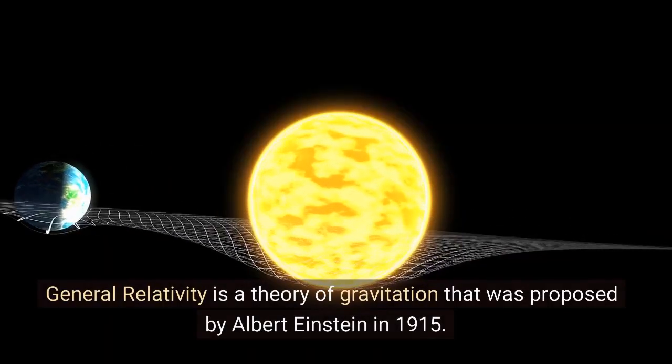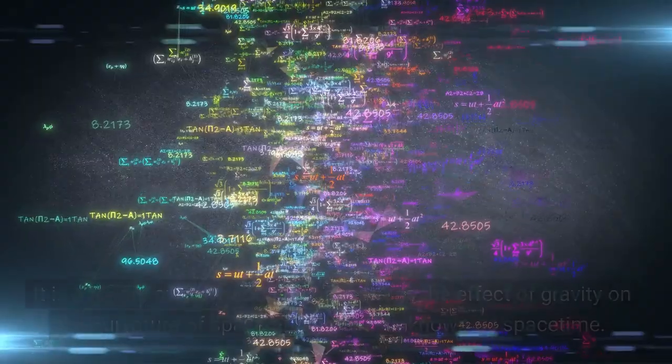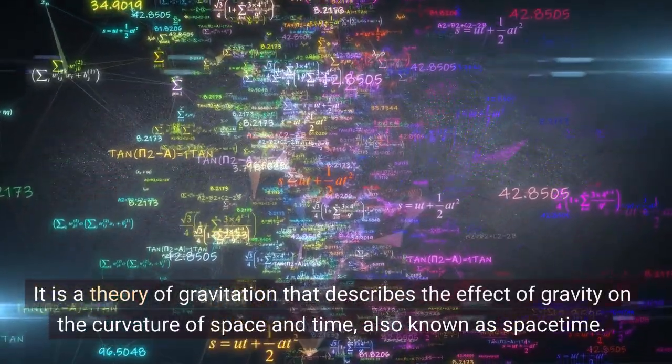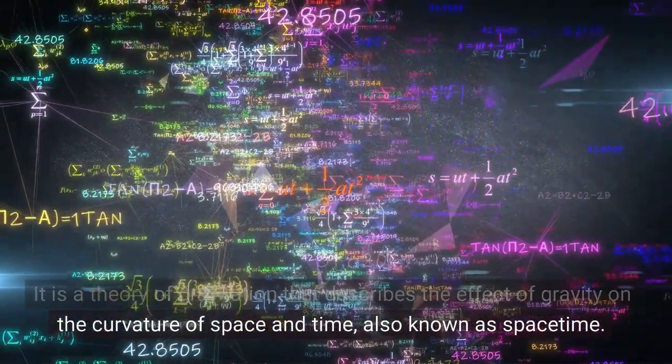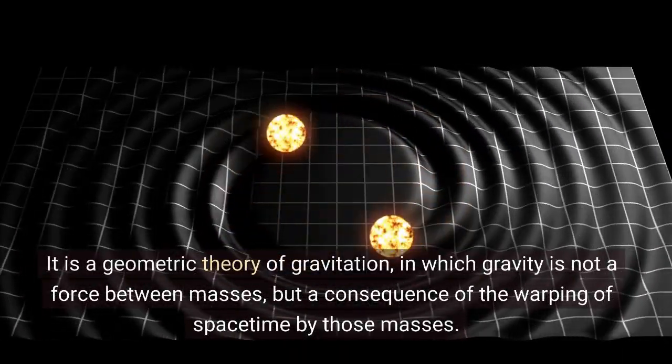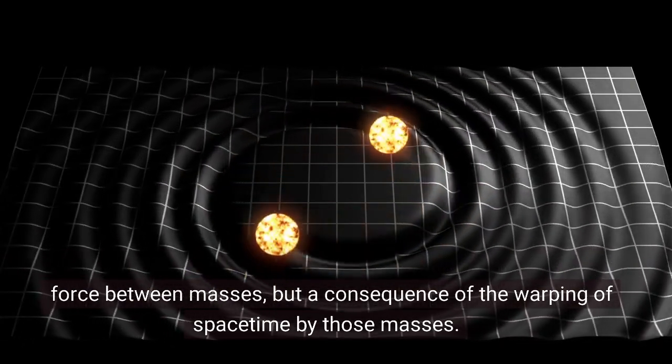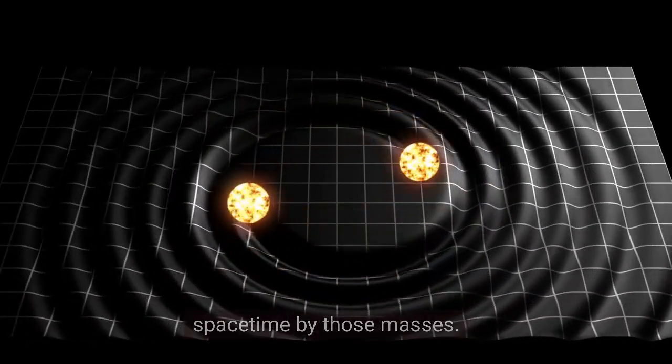General relativity is a theory of gravitation that was proposed by Albert Einstein in 1915. It describes the effect of gravity on the curvature of space and time, also known as spacetime. It is a geometric theory of gravitation, in which gravity is not a force between masses, but a consequence of the warping of spacetime by those masses.